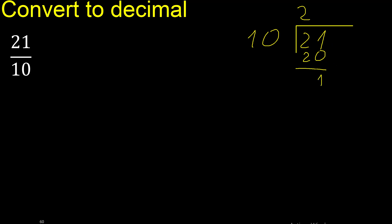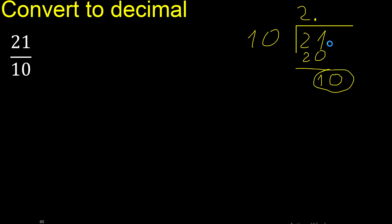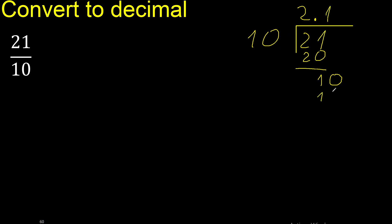There is no number that goes down, therefore complete. Always complete with 0, and here with a decimal point. 22: multiply by which number is nearest to 23? Multiply by 1 is exact. 23 subtract 23 is 0. Therefore finish.